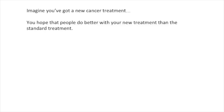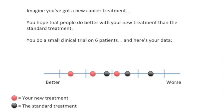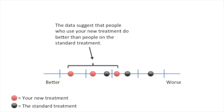Imagine you've got a new cancer treatment. You hope that people do better with your new treatment than the standard treatment. You do a small clinical trial on six patients. And here's your data. The red dots represent people that took your new treatment, and the black dots represent people that took the standard treatment. The values range from better to worse. The data suggest that people who use your new treatment do better than people on the standard treatment.